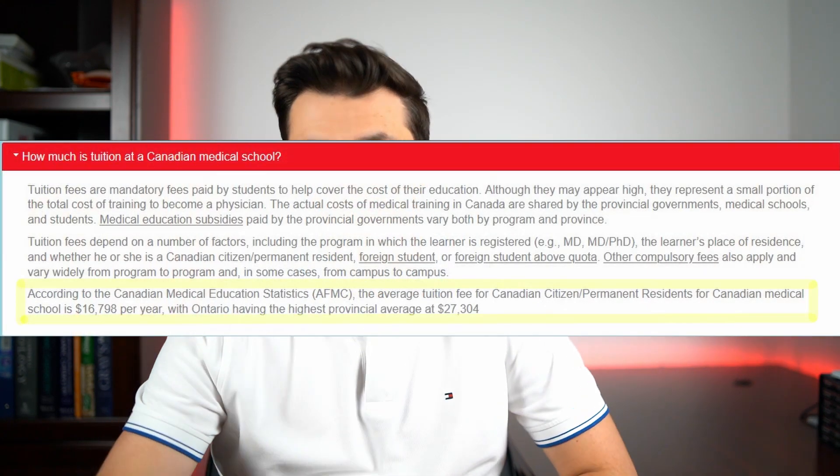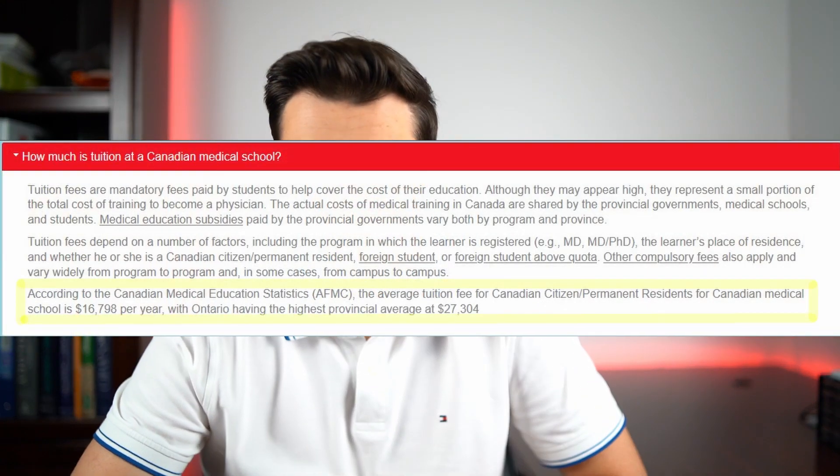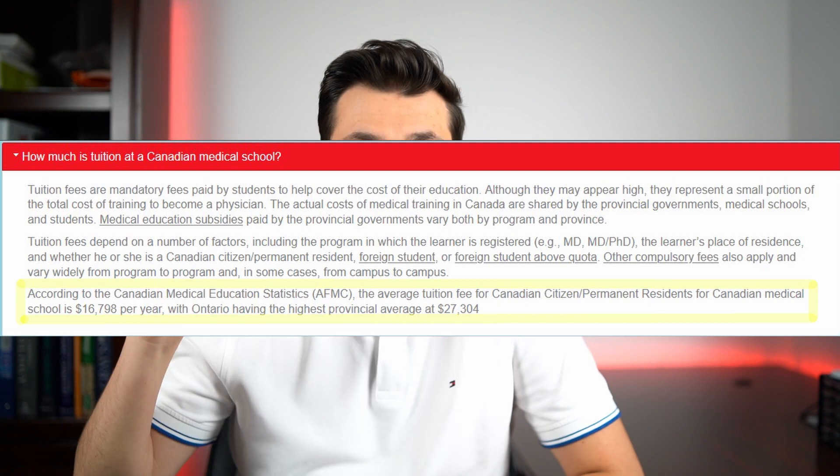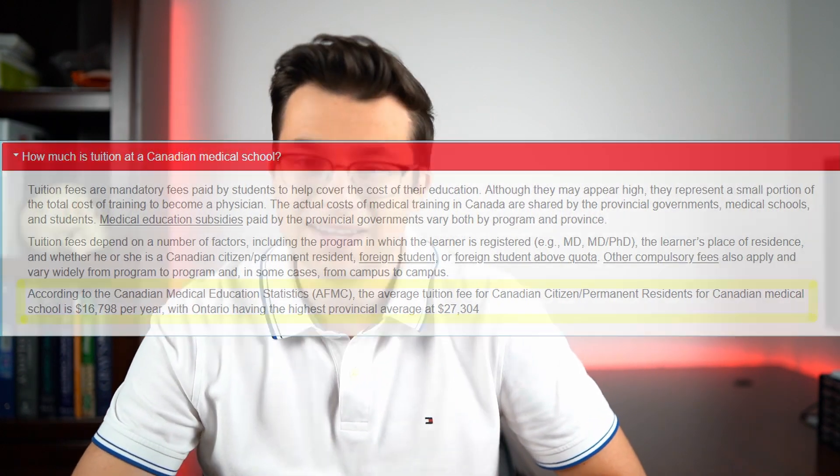Now let's move on to Canada. According to the Association of Faculties of Medicine of Canada, the average tuition cost for a Canadian citizen at a Canadian medical school is around $17,000 per year, with the most expensive province, Ontario, having an average of $27,000 per year.